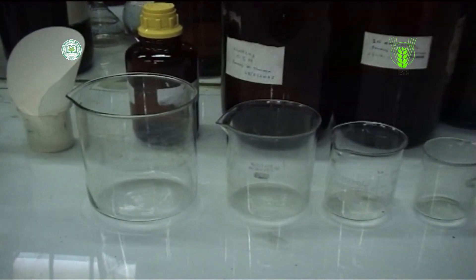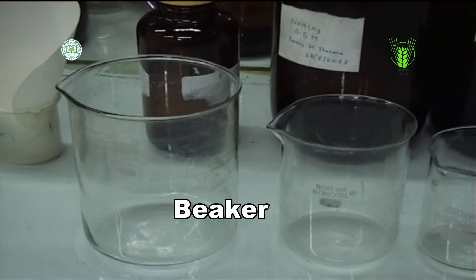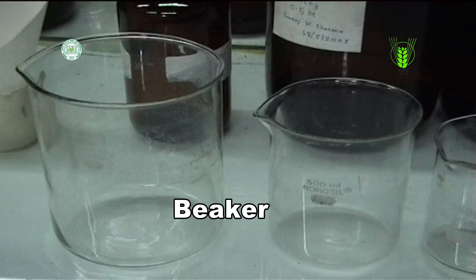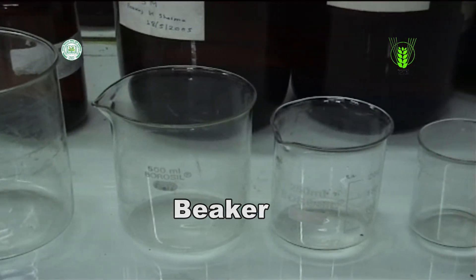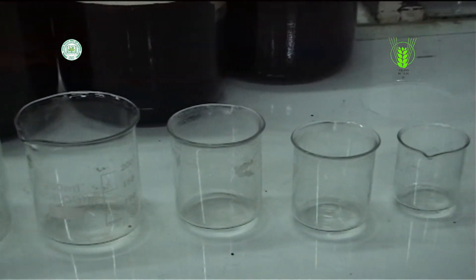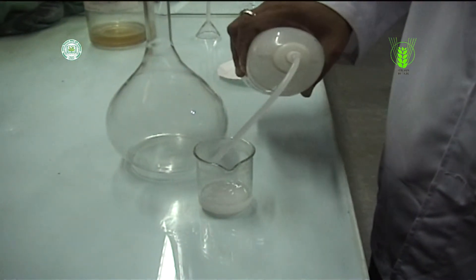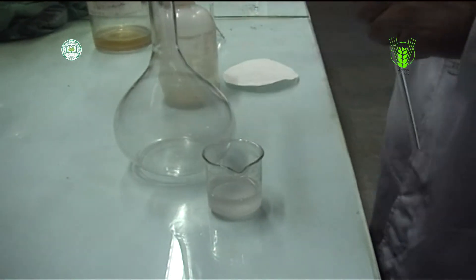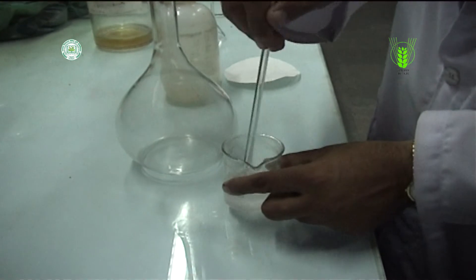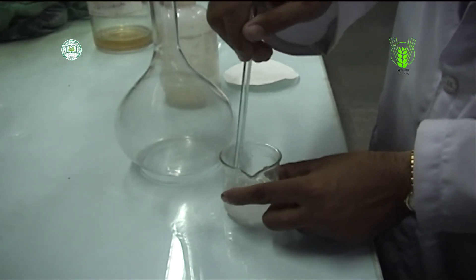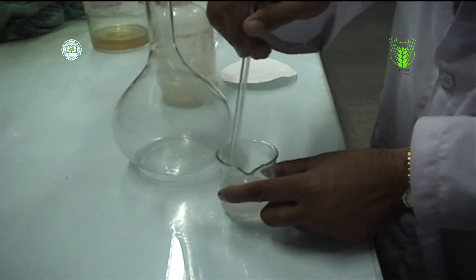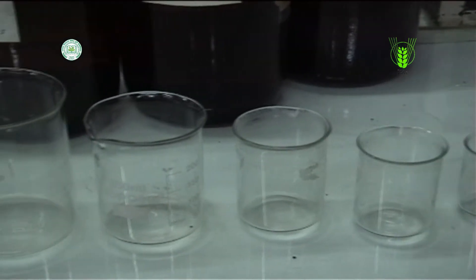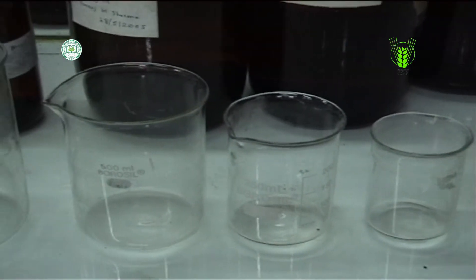One common glassware is a beaker. These are beakers. It is a simple container for stirring, mixing and heating liquids commonly used in many laboratories. Beakers are generally cylindrical in shape with a flat bottom. Most also have a small beak or spout to aid pouring as shown. Beakers are available in a wide range of sizes from 10 ml up to several liters.